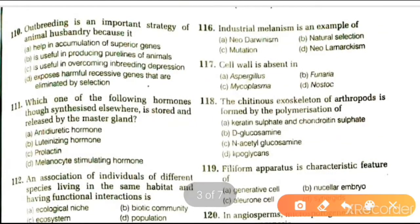Next question: industrial melanism is an example of neo-Darwinism, natural selection, neo-Lamarckism, or mutation. The answer is natural selection. Also, cell wall is absent in Aspergillus, Funaria, Nostoc, or Mycoplasma. The option is C, Mycoplasma, because in mycoplasma the cell wall is absent but its cytoplasm is surrounded by a trilaminar, three-layered structure.